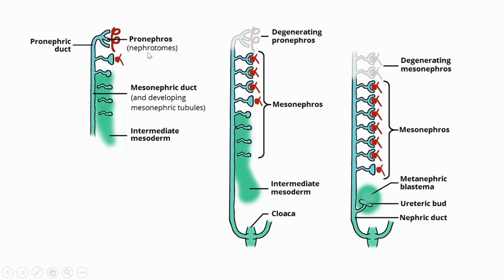Even in the embryonic period of higher vertebrates, this same kidney development pathway is followed. In humans, until the fourth week of embryonic life the kidney is pronephric — developed from the anterior end of the nephric duct. After the fourth week that kidney degenerates, the middle portion develops into the mesonephric kidney, which functions for some period. After that it also degenerates and the posterior part of the nephric duct develops into the permanent metanephric kidney retained in higher vertebrates including us.